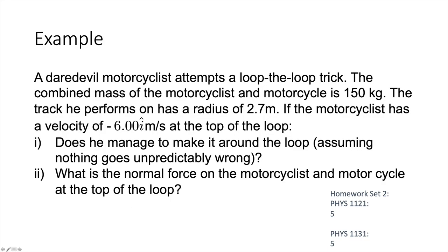Now let's try homework set 2, question 5. A daredevil motorcyclist attempts a loop-the-loop trick. The combined mass of the motorcyclist and motorcycle is 150 kilograms, and the track has a radius of 2.7 meters. If the motorcyclist has a velocity of minus 6.00i meters per second at the top of the loop, does he manage to make it around? And what is the normal force on the motorcyclist and motorcycle at the top of the loop?